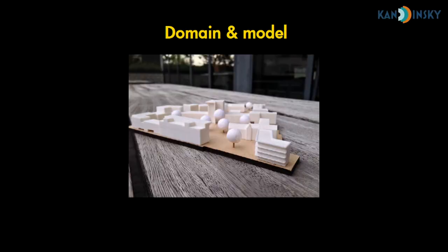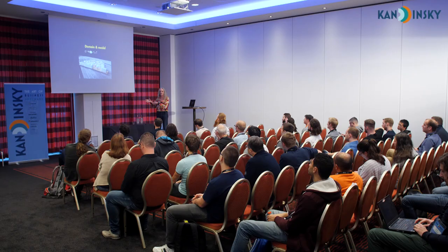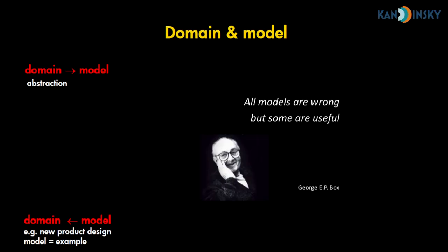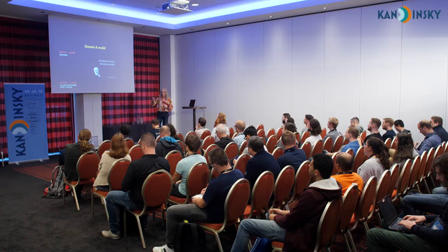You abstract from a lot of things that are not relevant. For instance, with the balloon, we abstracted from the color of the balloon — it was not relevant. Here in this architectural model, it's not intended to build white houses or to plant white trees; that's something in the model that is not important. Because you abstract, the model is always wrong — it's never one-on-one with the reality, with the domain. But it is about whether it is useful to make a model. And you can also go from the model to the domain, as we saw with the architectural model, where you build something using the model as an example.